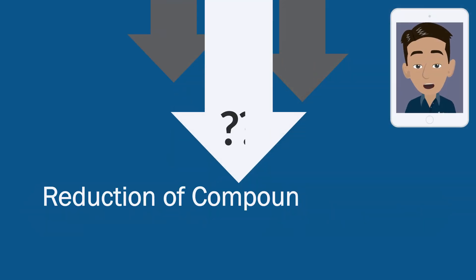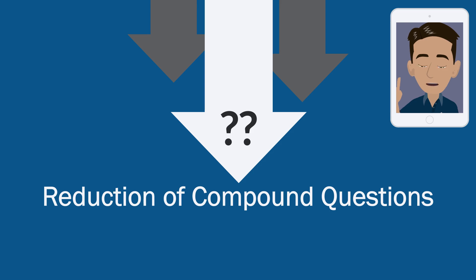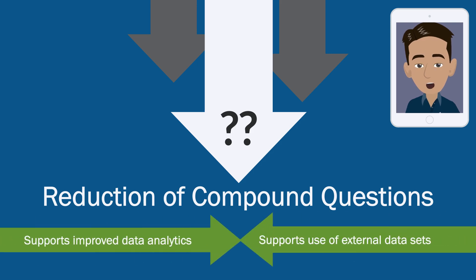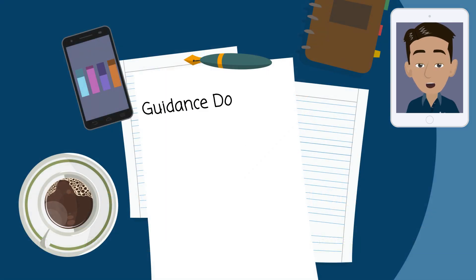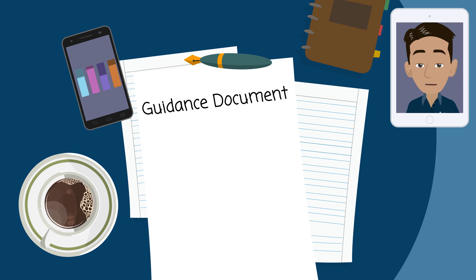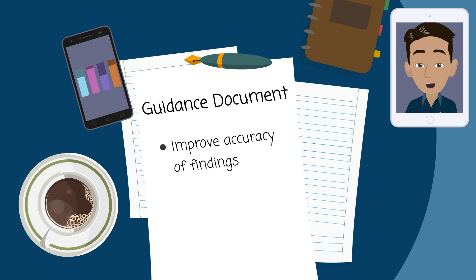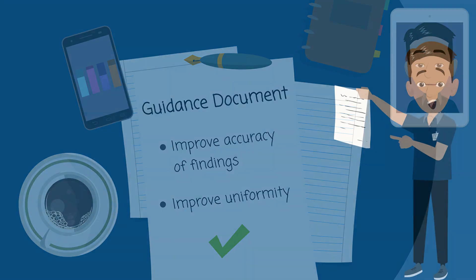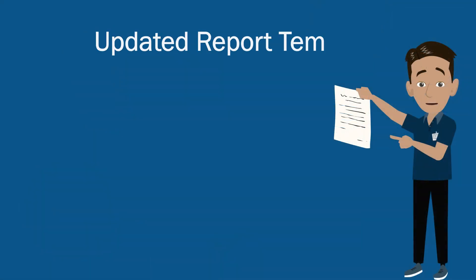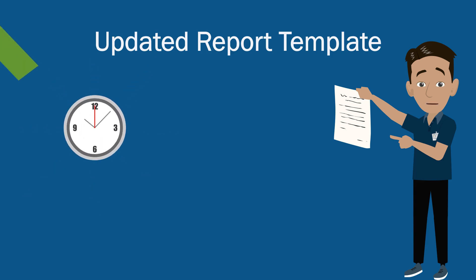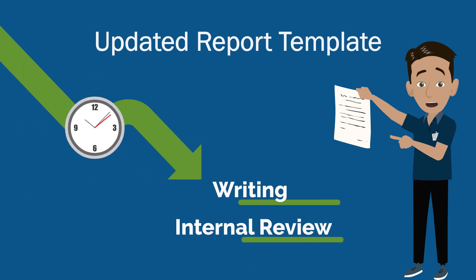The third improvement is the reduction of compound questions, which resulted in an increased number of questions in the assessment. This helps CISA perform more effective and granular data analytics at the question level to understand trends in cyber practices. The fourth change is the creation of a clear guidance document to support assessors in effectively facilitating assessments and gathering information, ensuring all assessors seek the same information and document findings uniformly. Finally, the fifth major change is on the HVA report template, which CISA has updated in a streamlined fashion to reduce time spent writing and reviewing the report sections.